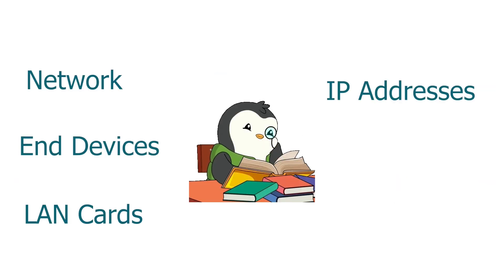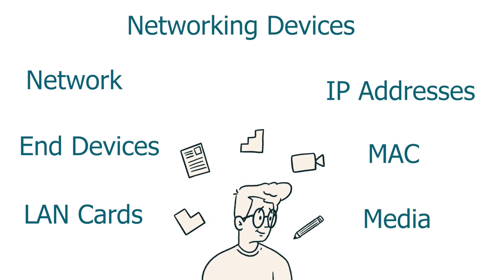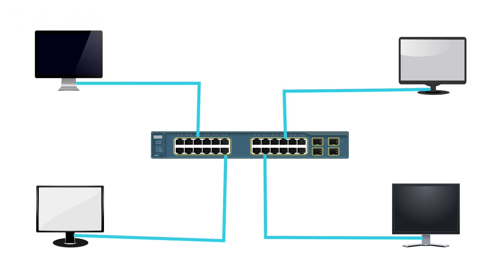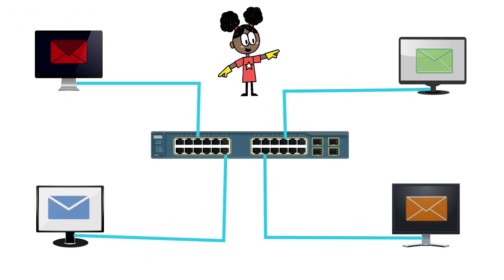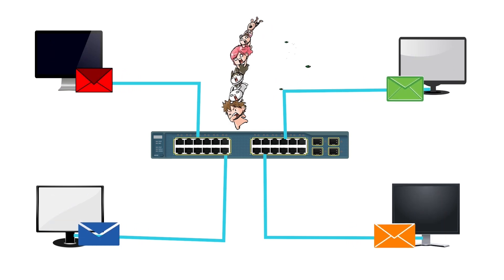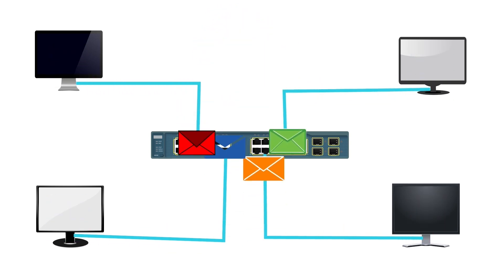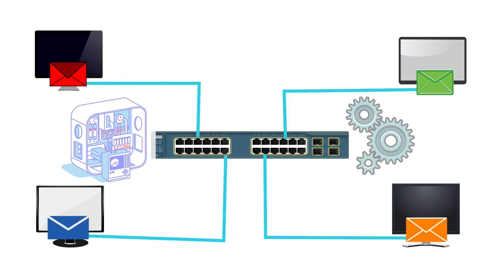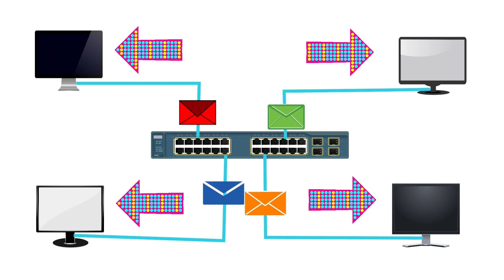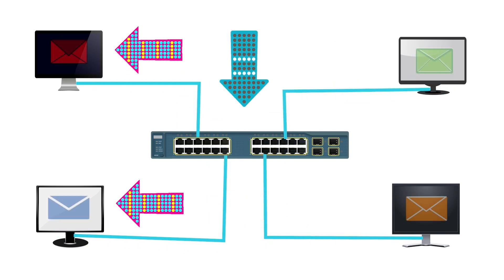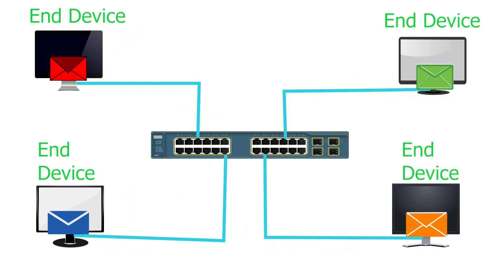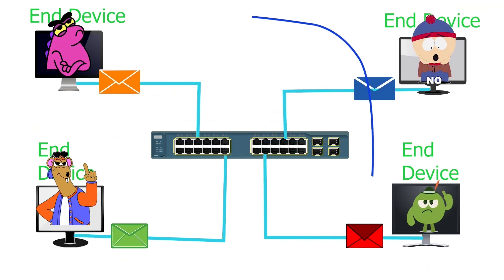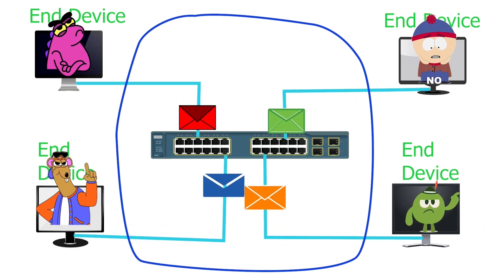Learning a few basic networking terms and functions of essential networking components is the first step of our ongoing journey. A network is a group of devices connected for data and resource sharing. A network needs at least two devices, with no upper limit — you can attach as many end devices as you want. The more devices you attach to a network, the more complex it becomes. In a simple network, we have four computers connected through a switch. These computers are called end devices. An end device is the device that sends or receives data, and it does not need to know how data travels to another end device.